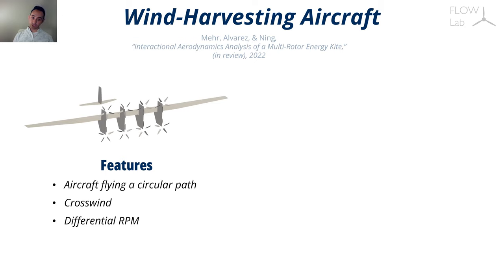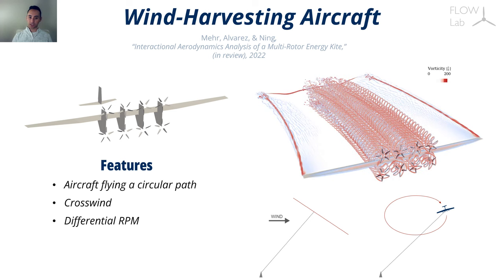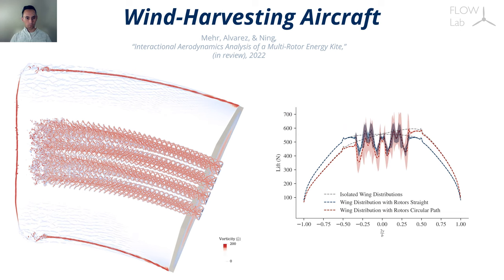In another application, we simulated an airborne wind energy aircraft. This flies in a circle tethered to the ground in a crosswind, and the rotors work as turbines extracting energy from the wind. We simulated the aircraft flying the circular path. This creates an asymmetric loading across the wingspan, since the velocity varies from one tip to the other. We also compared the wing loading with and without the rotors.